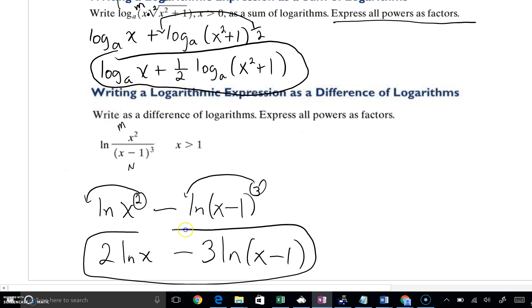And we'll have 2 natural log of X minus 3 natural log of X minus 1. By the way, you might have noticed some inequalities. Like in the first problem, X was greater than 0. In this one, it's X greater than 1. That's just to guarantee that our final answer is going to have positive numbers inside of the logs. If X is greater than 1, both of these logs have positive arguments. Arguments are the expressions inside of the log.